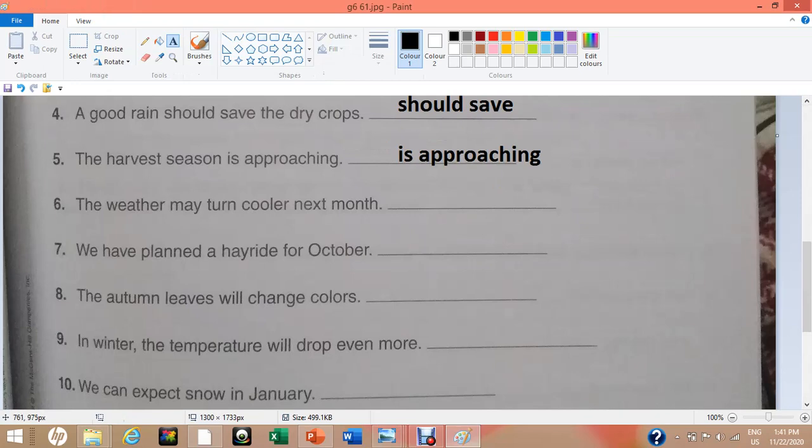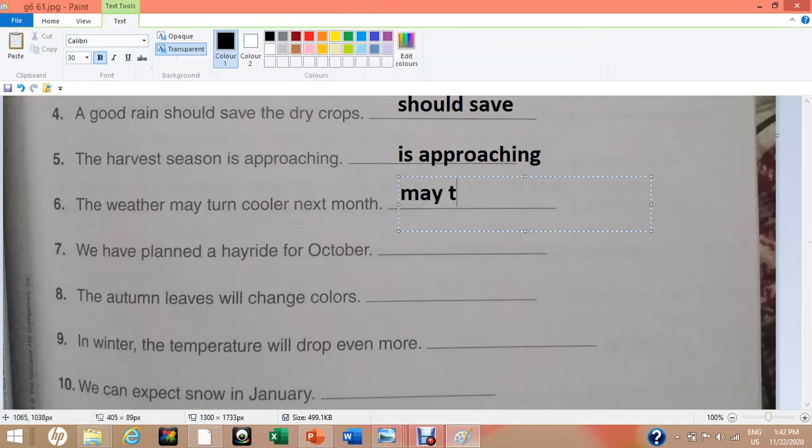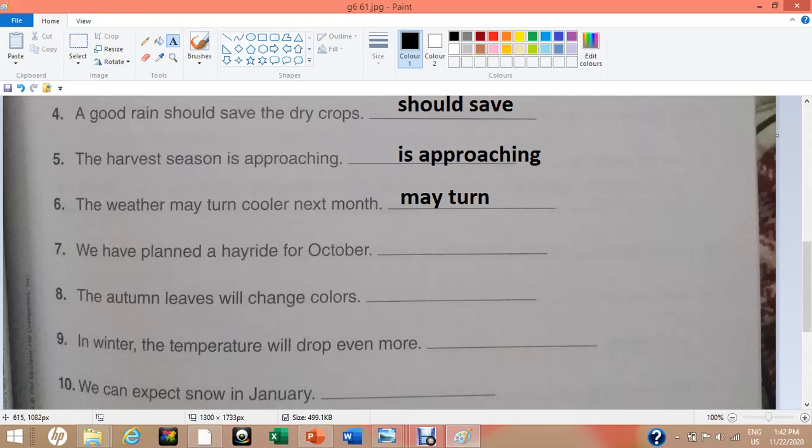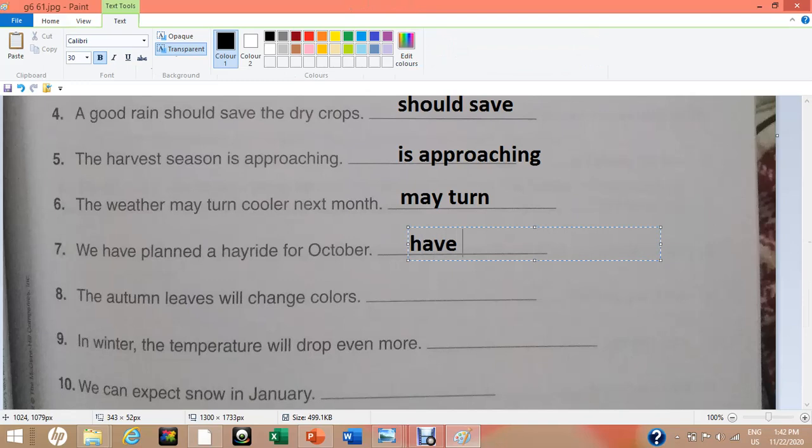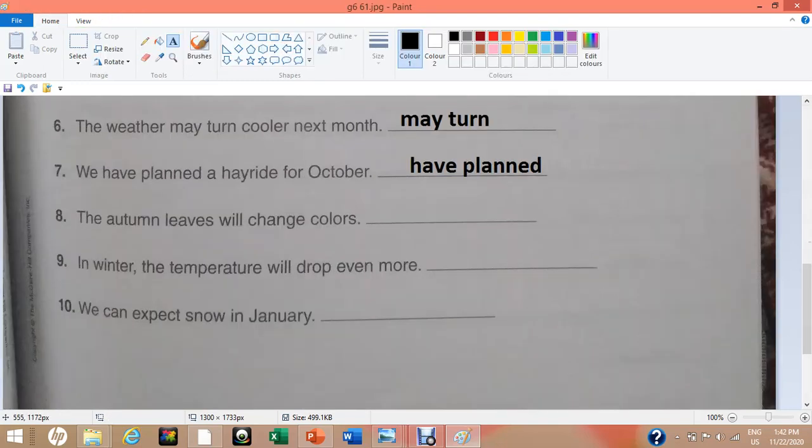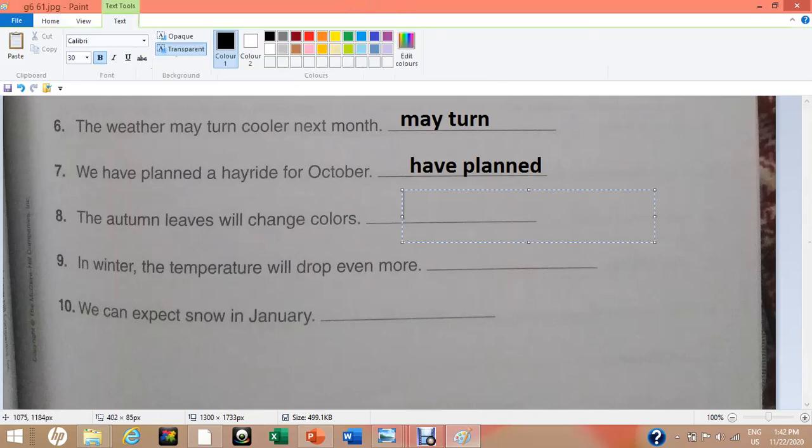The weather may turn cooler next month. May turn is the verb phrase. Number 6. We have planned a hayride for October. Have planned. This is the verb phrase for number 7. Number 8. The autumn leaves will change colors. Will change is the verb phrase for number 8.